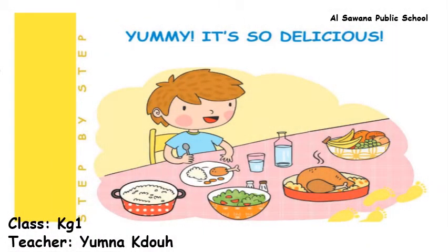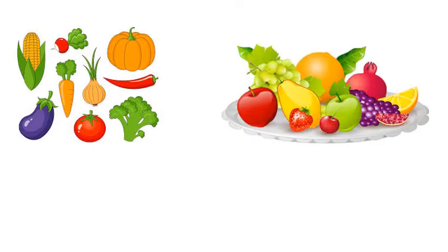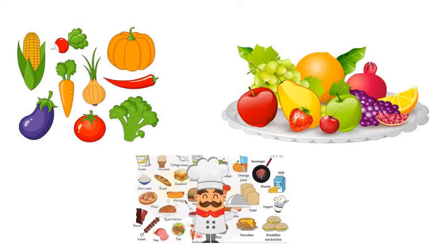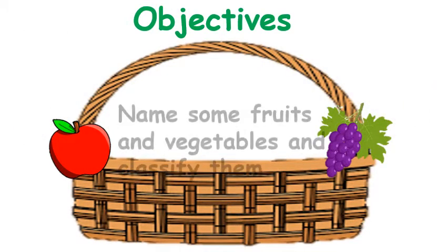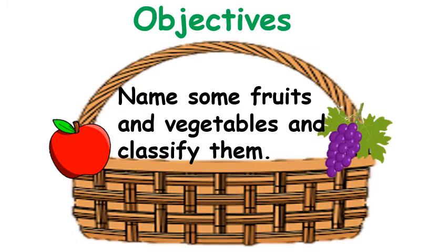Hello kids, again today we are going to start with a new project. This is project two, yummy it's so delicious. In this project we are going to talk about vegetables, fruits, and some delicious food you like and you know them. The objective that we are going to cover is identify or name some fruits and vegetables and classify them.